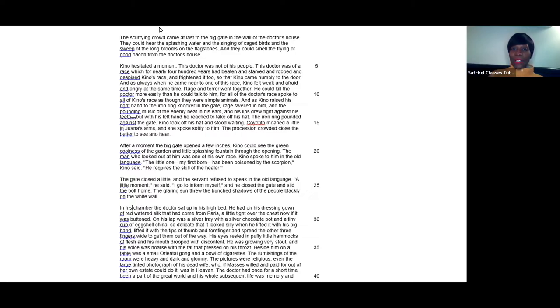The scurrying crowd came at last to the big gate in the wall of the doctor's house. They could hear the splashing water, the singing of caged birds, the sweep of long brooms on the flagstones, and smell the frying of good bacon from the doctor's house. Kino hesitated a moment. This doctor was not of his people. This doctor was of a race which for nearly 400 years had beaten, starved, robbed, despised, and frightened Kino's race, so that Kino came humbly to the door. As always when he came near one of this race, Kino felt weak and afraid and angry at the same time. Rage and terror went together. He could kill the doctor more easily than talk to him, for all the doctor's race spoke to all of Kino's race as though they were simple animals.